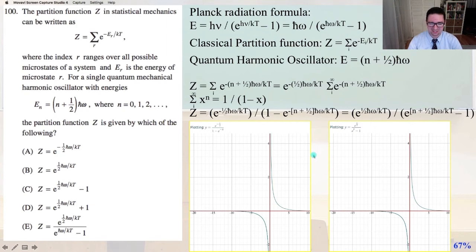Question 100 of the physics GRE, GR 0877. Sound the fireworks, crack open a beer to celebrate if you're 21, and let's dive right on into it. The partition function z in statistical mechanics can be written as z equals the sum over r of e to the negative e of r divided by kt. So where the index r ranges over all possible microstates of a system, and e_r, e subscript r, is the energy of microstate r. For a single quantum mechanical harmonic oscillator with energies e subscript n, it equals (n + 1/2) times ℏω. We're familiar with that. We've seen it throughout the exam, where n equals 0, 1, 2, dot, dot, dot. The partition function is given by which of the following?